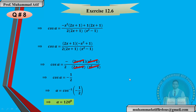You can see I used the cosine rule here — it's up to you which method you use, the steps lead to the same result. This completes Exercise 12.6. We have proved the half angle formulas. Please review these lectures and attempt the questions. Inshallah, we will move to Exercise 12.7 next, where we will discuss different proofs and then practice the exercise. Thank you.